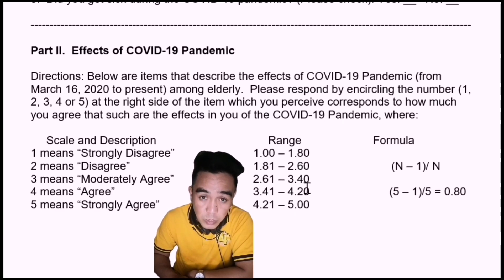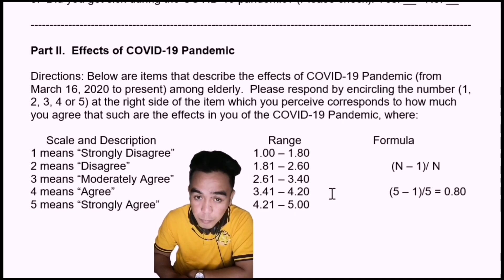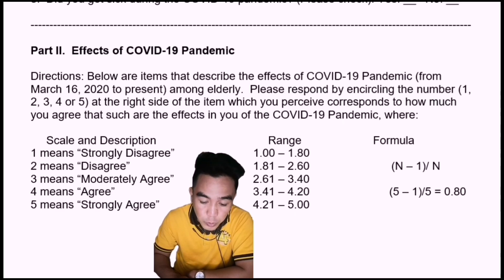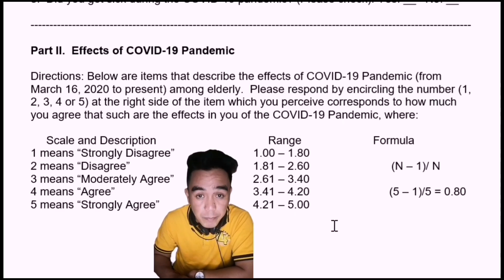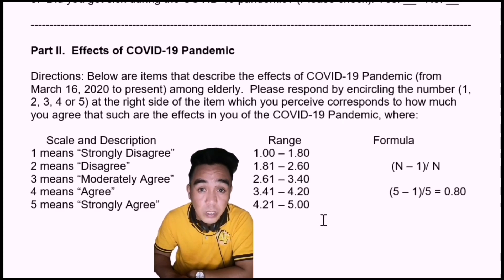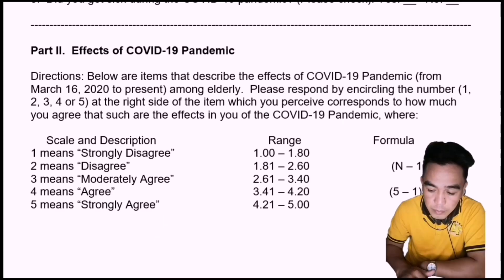Using the same process, we add each row by 0.80. So we have 2.61 to 3.40. After 3.40 is 3.41, so 3.41 to 4.20, and 4.21 to 5.0. This is the very important range to be used when we do the treatment later.